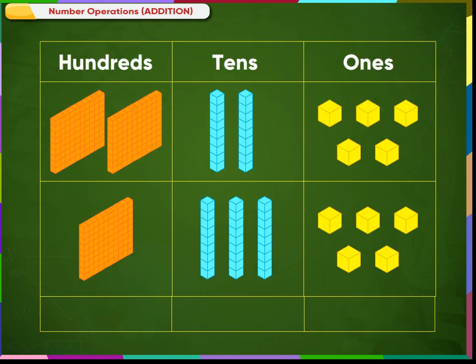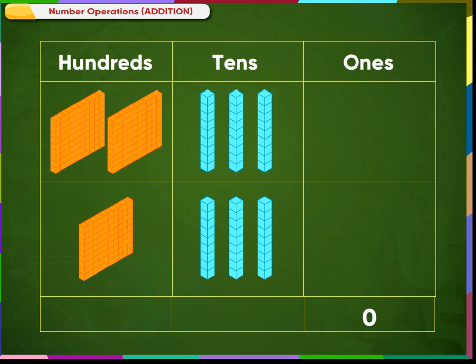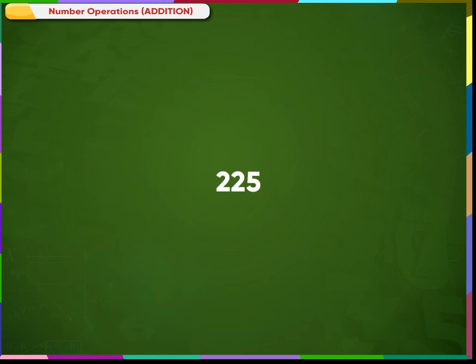On adding the cubes in the ones place, we get ten cubes in all. These ten cubes group together to form one rod, which gets carried to the tens place. Thus, on adding, we get six in the tens place and zero in the ones place. Now, on adding two and one in the hundreds place, we get three. Therefore, 225 plus 135 is equal to 360.